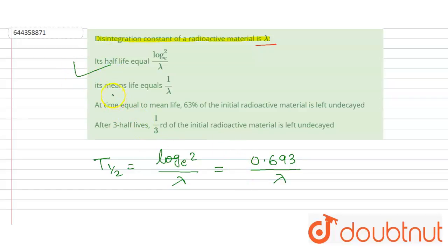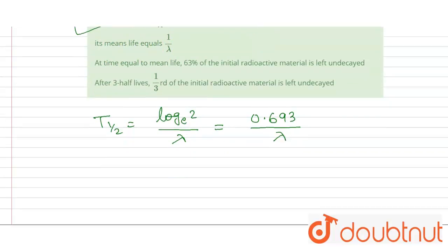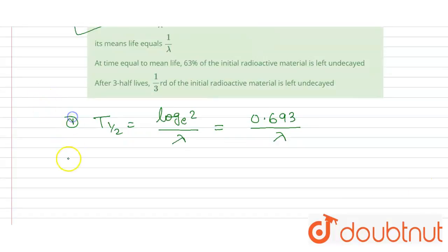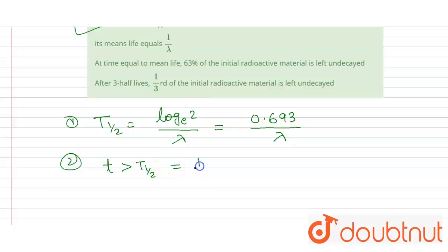The second option states its mean life equals 1 by lambda. The mean life, denoted by t, is greater than the half life and is equal to 1 by lambda. So the second option is also correct.